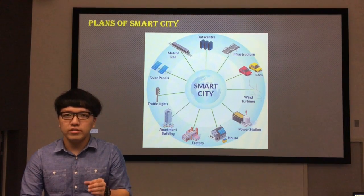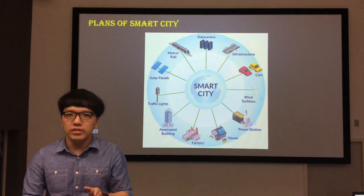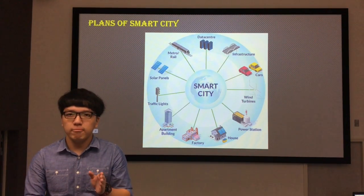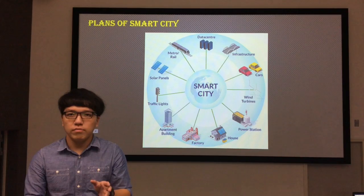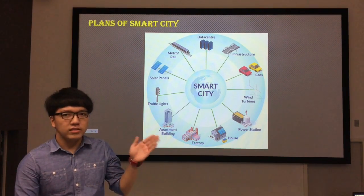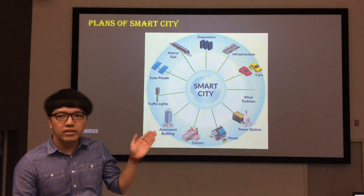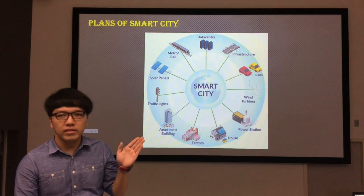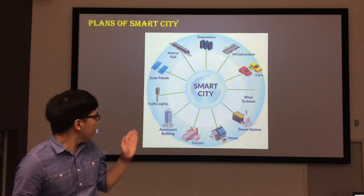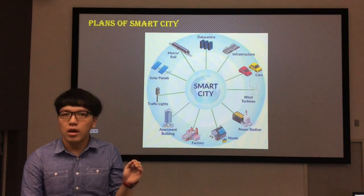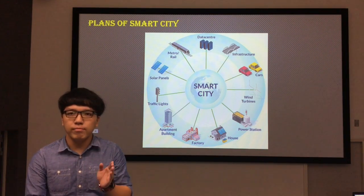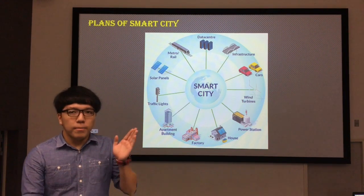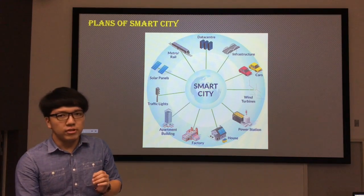According to the different needs of a smart sustainable city, the plans for a smart city will vary from case to case. This is the overall plan of the smart city that includes cars, infrastructure, data center, metro rail, apartment buildings, and others. The things that I mentioned are the main focus for Medini.